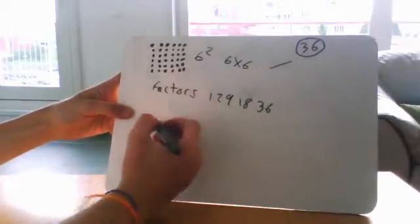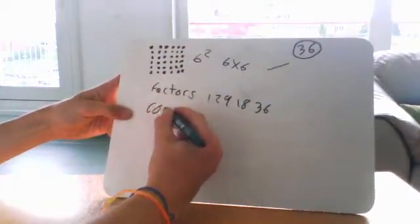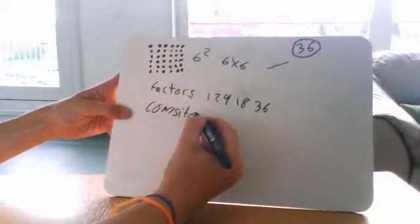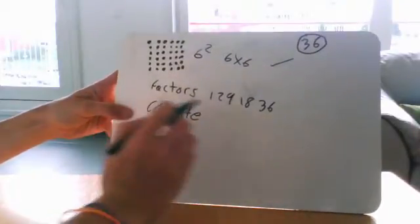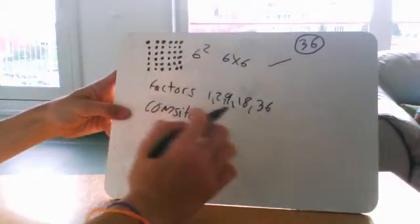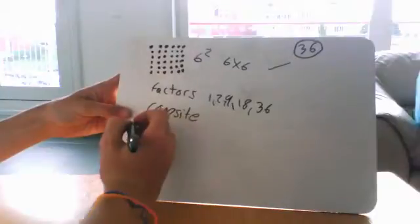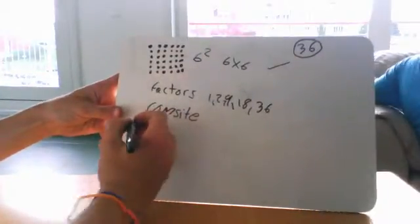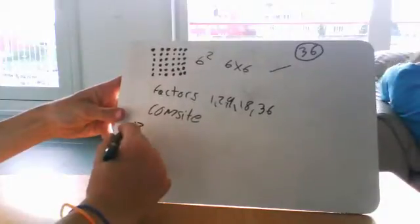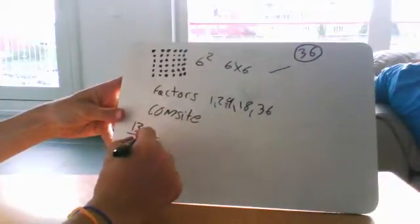This is a composite number because it has more than one factor. A prime number is 13 because it has only 1 and itself.